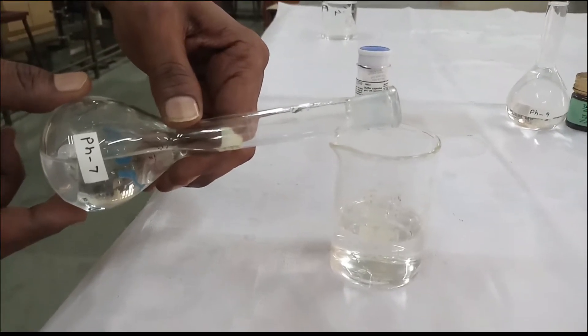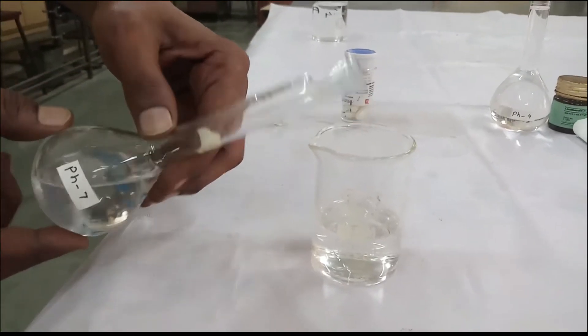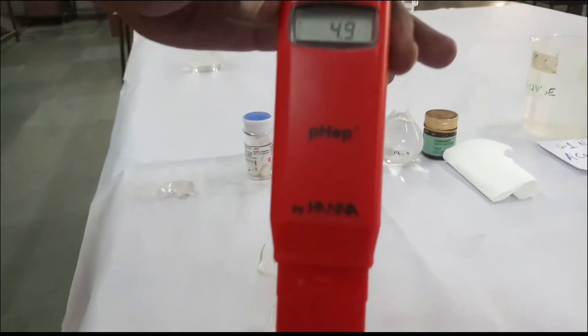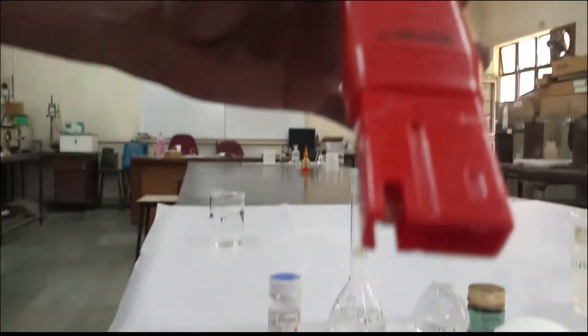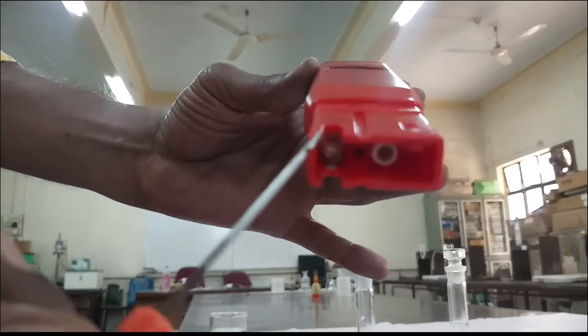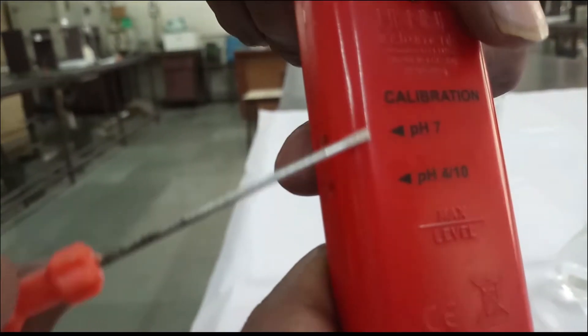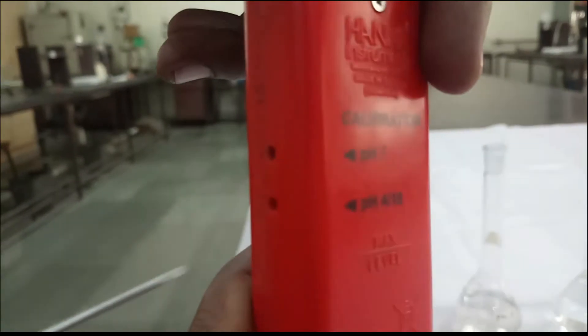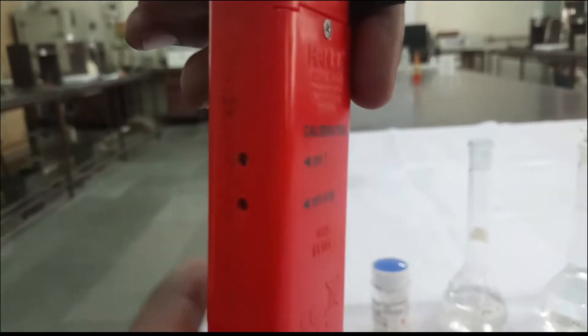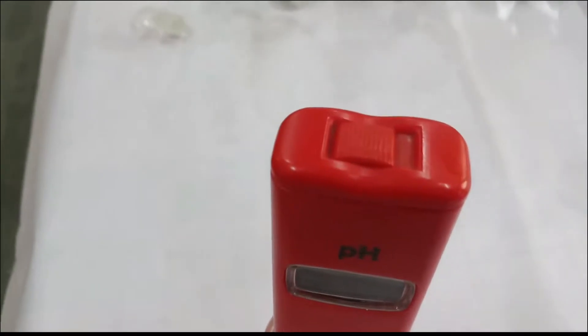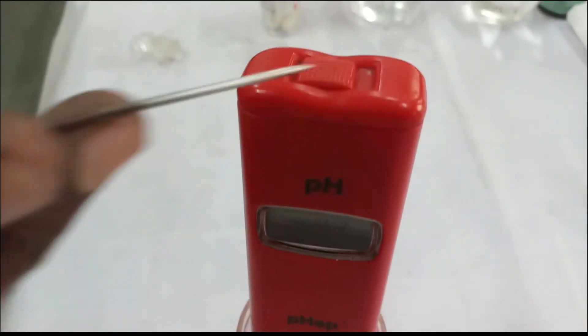Take pH 7 buffer solution in a clean beaker. This is the pH meter, and this is the glass electrode. These are the two calibration knobs, one for pH 7 and the other one for pH 4 or 10. Here is the on-off button.